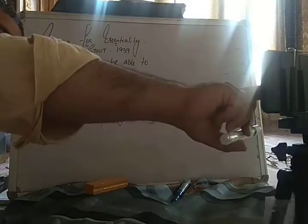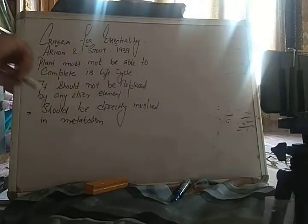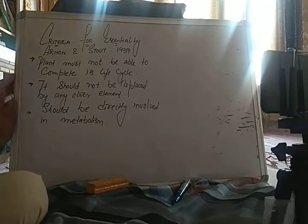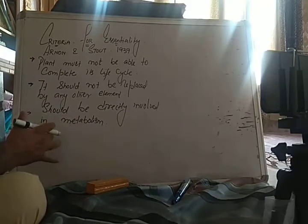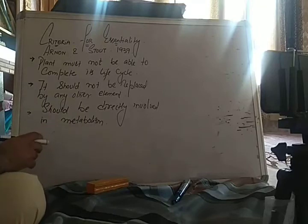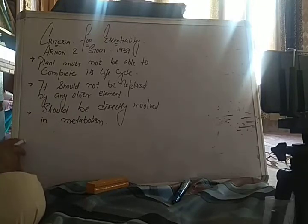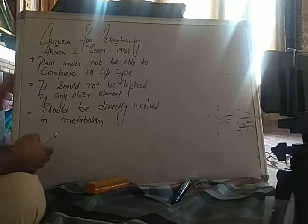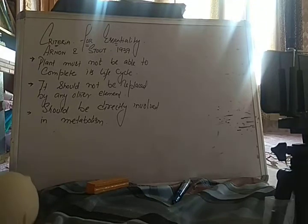The criteria for essentiality: first, a plant's life cycle must be completed in the absence of that element — actually, it cannot be completed without it. Second, it should not be replaced by any other element. Third, it should be directly involved in metabolism. If any element fulfills all three criteria, it is called an essential element.